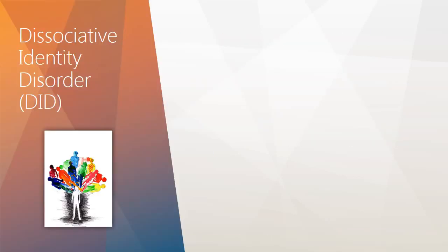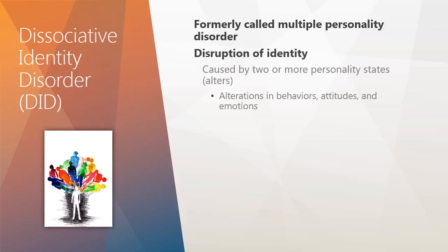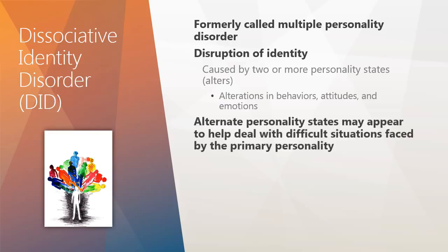The final dissociative disorder we'll take a look at is DID, which is bizarre and dramatic. It was formally called multiple personality disorder, and it involves a disruption of identity caused by two or more personality states. There are alterations in behaviors, attitudes, and emotions. The cardinal symptom is the apparent presence of multiple personalities, which are called alters. The personalities take turns being in control, and each personality has a different way of perceiving and relating to the world. Alternate personality states may appear to help deal with difficult situations faced by the primary or core personality. Child alters appear to be the most common type of alter, possibly created as a result of childhood trauma.